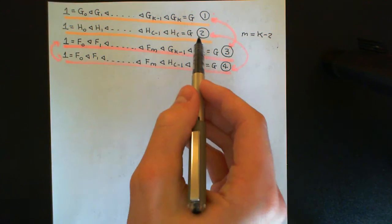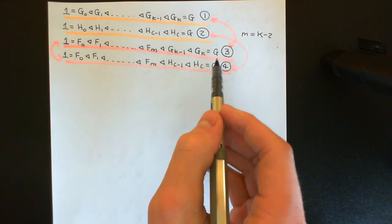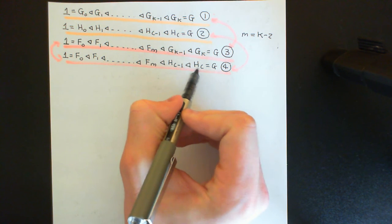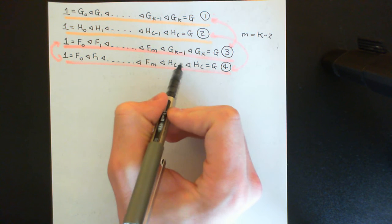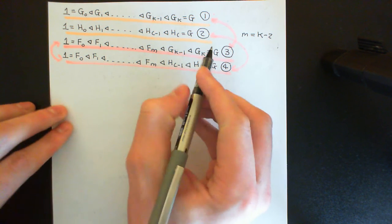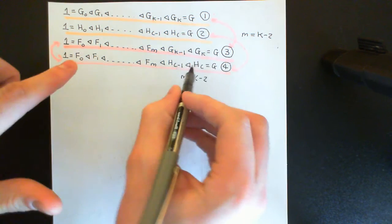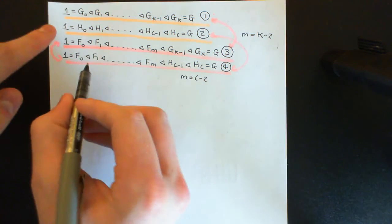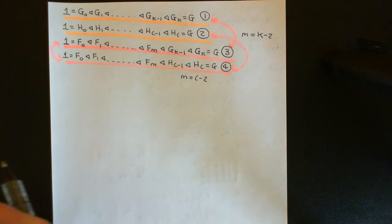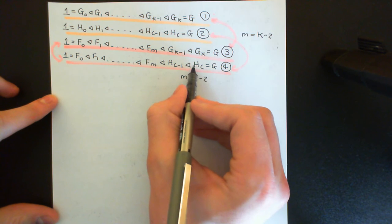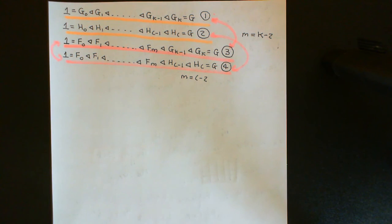The same argument holds for composition series two and four: they share the maximal normal subgroup H_{l-1}. By the identical argument using the inductive assumption, M = l - 2, the lengths of the series for H_{l-1} downward are equal, their composition factors correspond, and extending up to G by the final jump gives that series two and four obey part two of the Jordan-Hölder theorem.